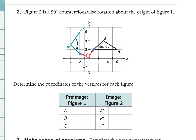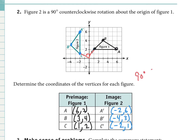Let's fill out the table. For the pre-image — the original black triangle — point A is at (6, 2), point B is at (3, 4), and point C is at (1, 2). After the 90-degree rotation, A prime is at (−2, 6), B prime is at (−4, 3), and C prime is at (−2, 1). Let's verify this follows the rule: for a 90-degree rotation, (x, y) → (−y, x).